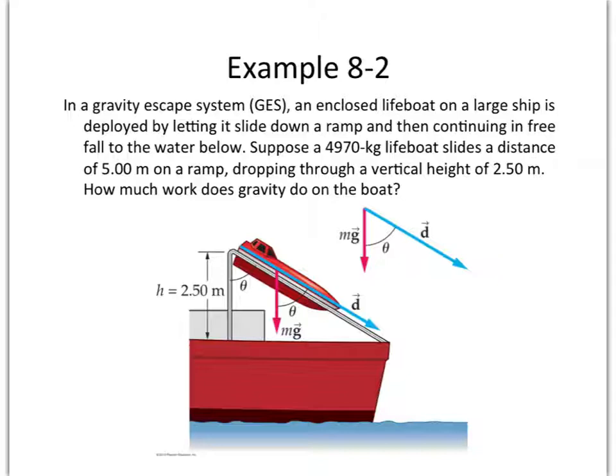Okay, welcome back everybody. We're continuing with our chapter 8 notes on work and energy, and this is example 8.2. We have a lifeboat system right here and this thing is sliding down this ramp. Lifeboats on boats tend to free fall through air into the water. We're not worrying about that. We're just worrying about it moving down this ramp right here. So just think of this surface right here as being the base level.